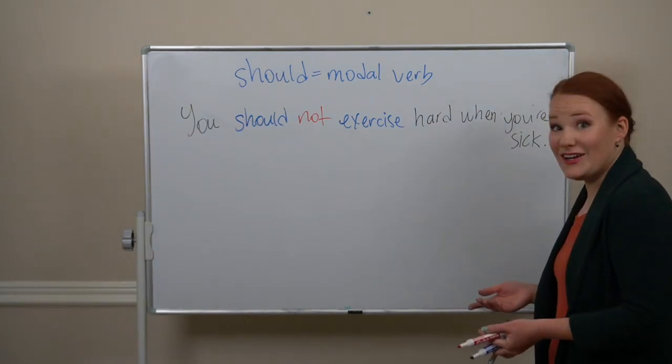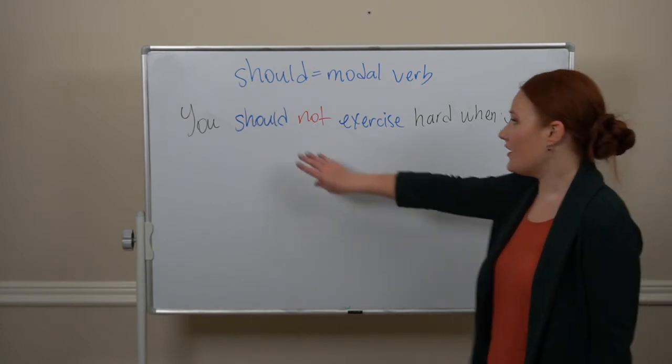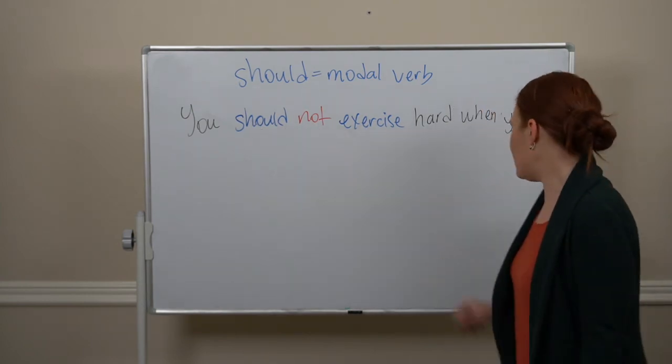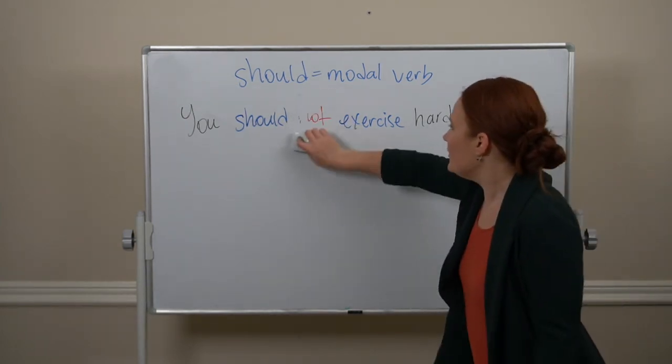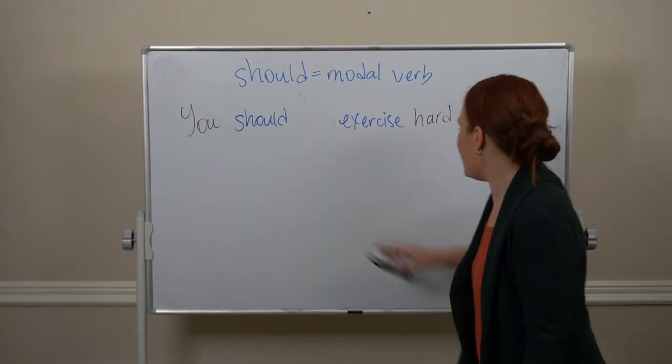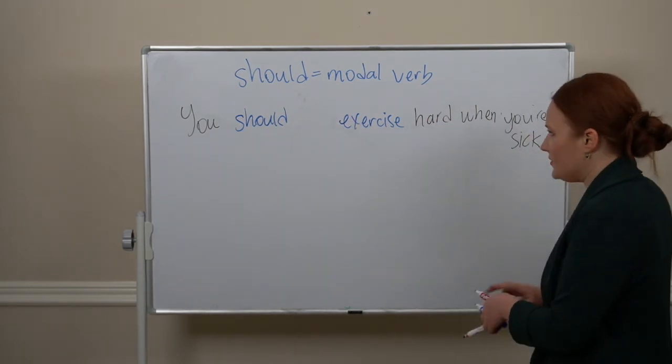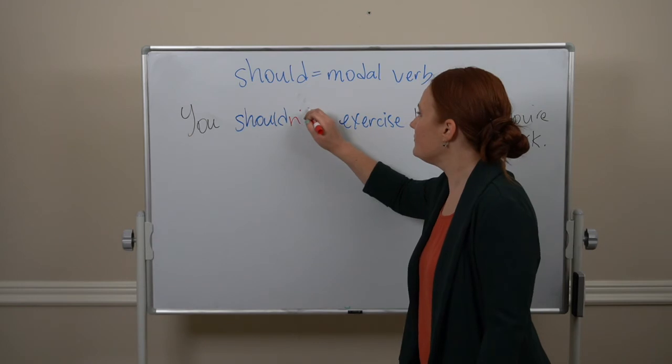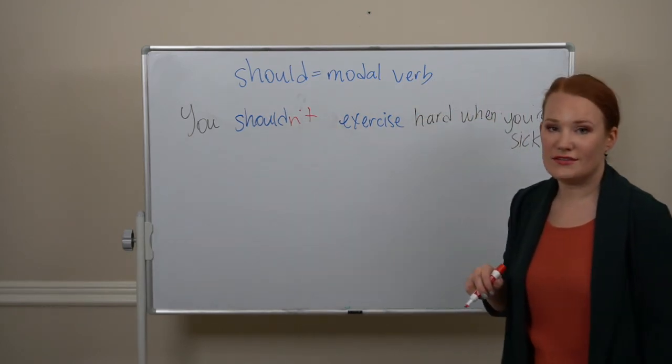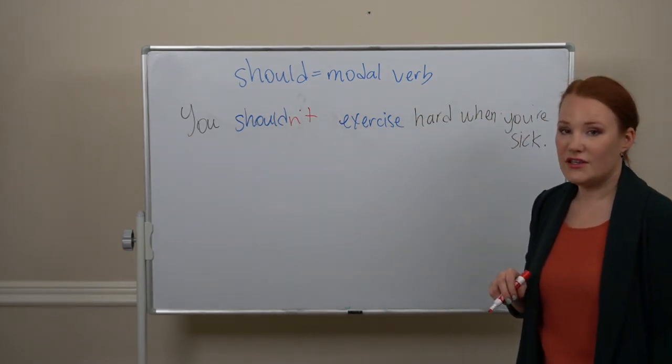We can also do a contraction with our auxiliary verb, should, and our negative, not. You should not exercise becomes you shouldn't exercise hard. Shouldn't. You shouldn't exercise hard.